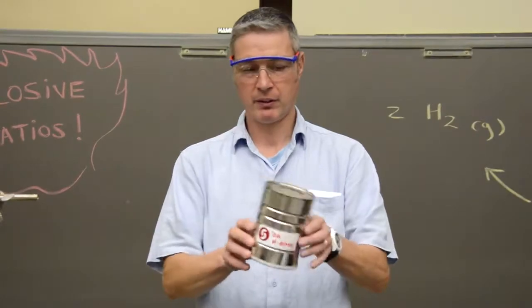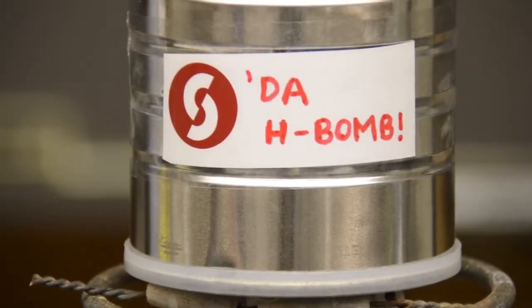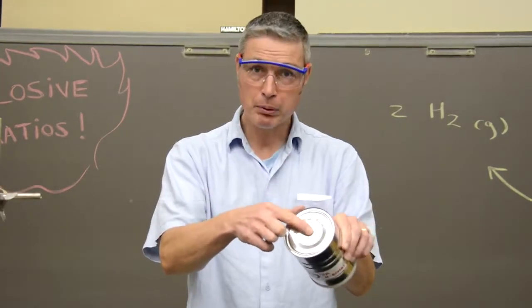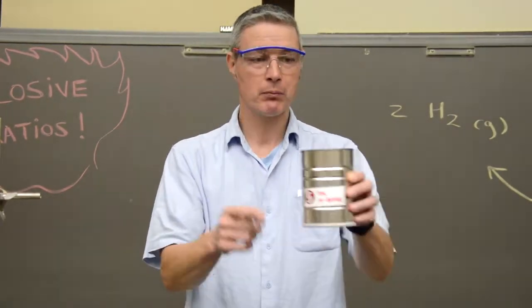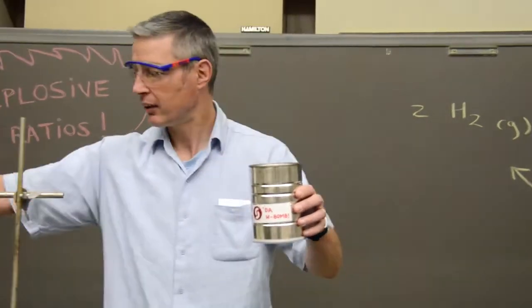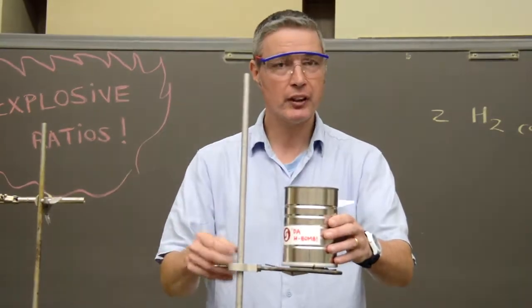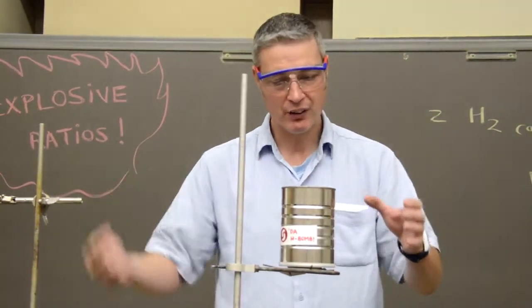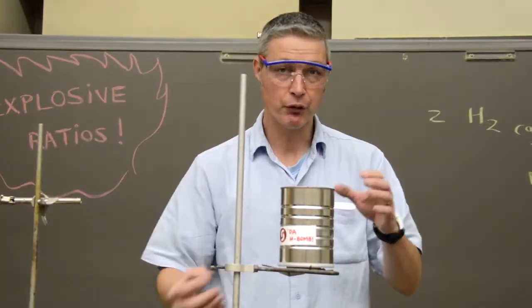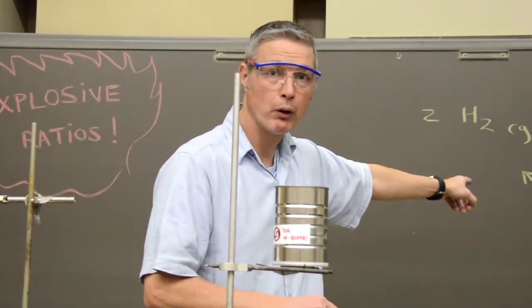Now we're going to get a little riskier. This is just a coffee can I decorated, but it's got a hole in the top, a hole in the bottom. We're going to fill it with hydrogen and then place it on this little pad. And what's going to happen is, as the flame burns, oxygen is going to come in through the bottom. It's going to burn, burn, and burn until two to one ratio.